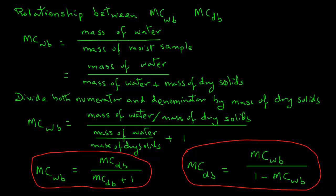So if we have 60% moisture, we mean 0.6 — that is 60 over 100, which gives us the fraction. Let's say that you are given the moisture content in wet basis as 80%. That means in fraction it will be 80 over 100, or 0.8.